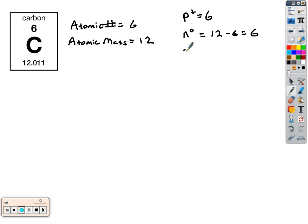And then for the number of electrons, the abbreviation for electron is E minus. It's going to be the same as the number of protons, six of those. So six protons, six neutrons, six electrons.